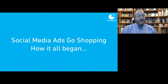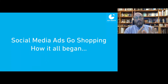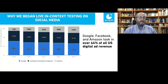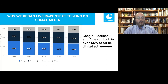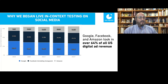Our CEO coined the phrase System Zero. He was at Yale in the late 1990s when implicit research testing was first being used for market research. When our company started in 1999, we focused on implicit and explicit research. System Zero is an innovative foundational next step to understand and predict consumers' behavior at every stage. Now let's talk about social media ads going shopping — how did this begin? In 2021 in the U.S., 64% of every ad dollar was spent on either Google, YouTube, Facebook, Instagram, and Amazon.